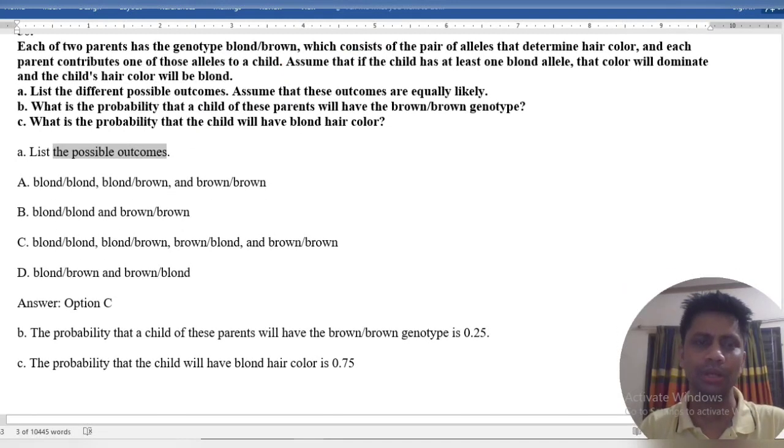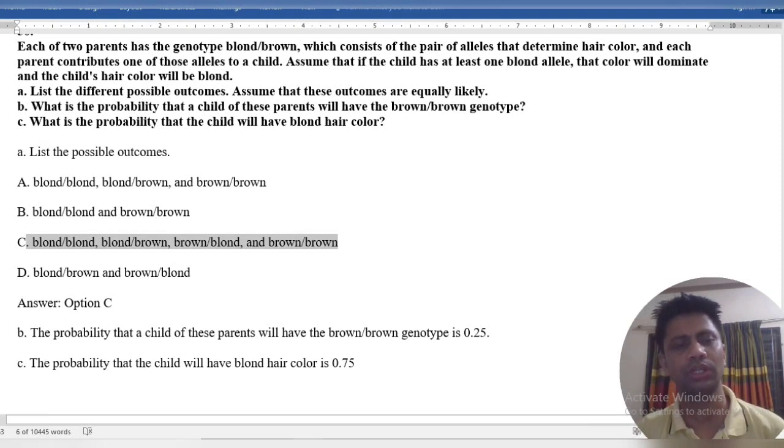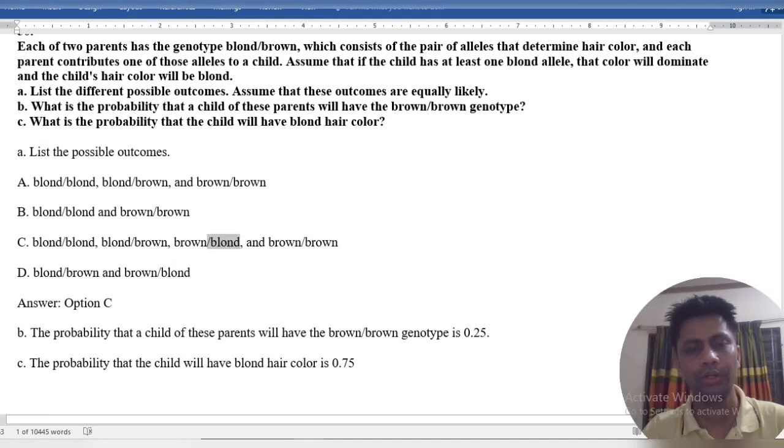List the possible outcomes. We know the list of possible outcomes is: blonde-blonde, blonde-brown, brown-blonde, and brown-brown. There are four possible outcomes. The answer is C.